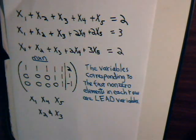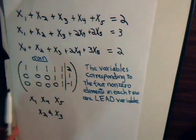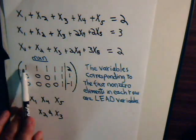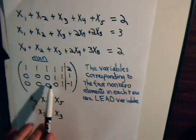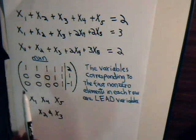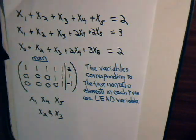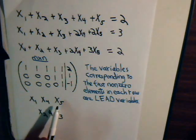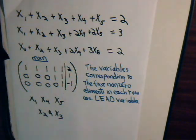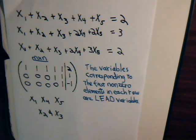When you have an underdetermined system where you have more columns than you have rows — here we have three rows and five columns — that means at most we can only have three lead variables. So you know there are going to be some variables left over, like x2 and x3, meaning you're going to have some free variables.